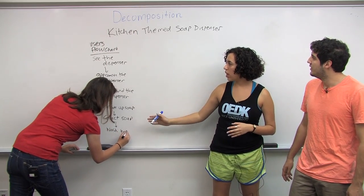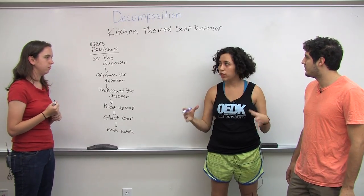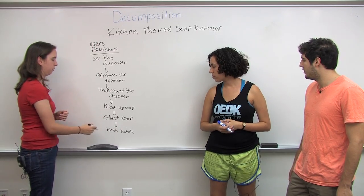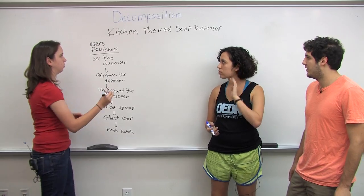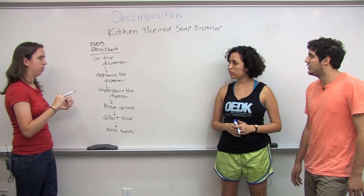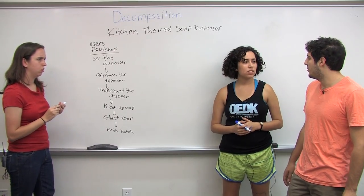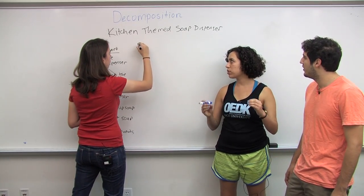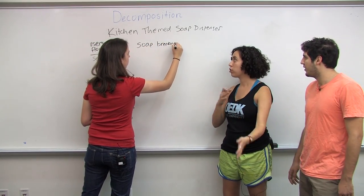From this line of how a user would use it — the steps a user would take — what kind of different functional aspects can we take away from that? I definitely think breaking the soap and collecting the soap are two really important, really big categories. So should we talk about the action the user performs, or the part of the dispenser? We should probably include both, so we can brainstorm different solutions under each one. The part could be like a crank or a handle, but the action could be like a push or a pull.